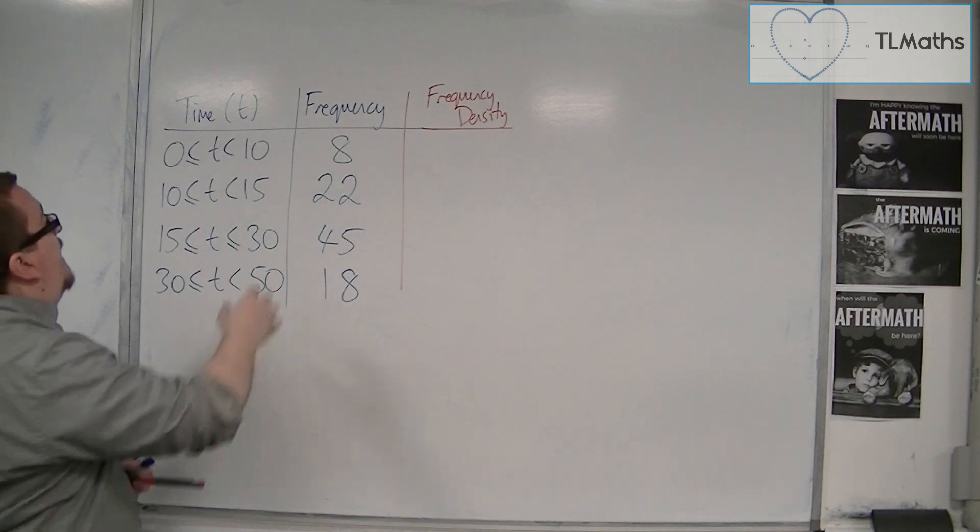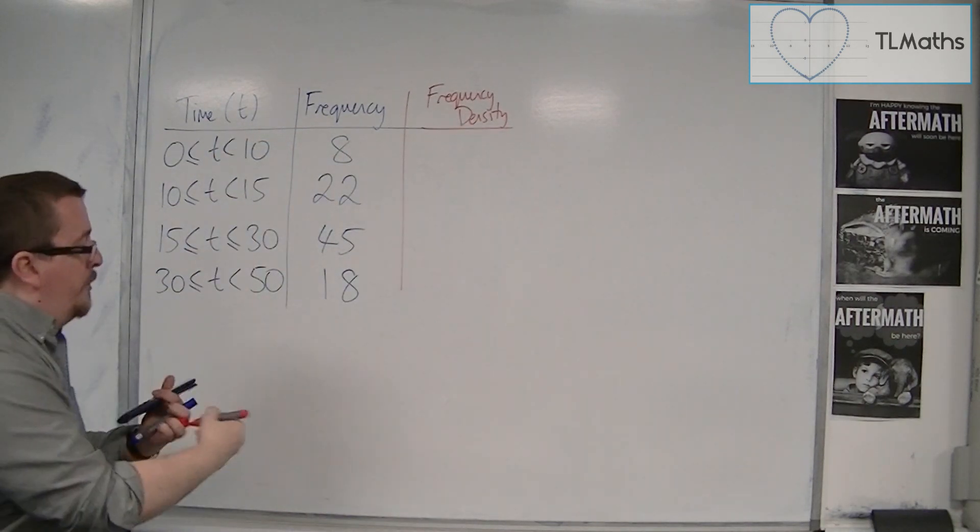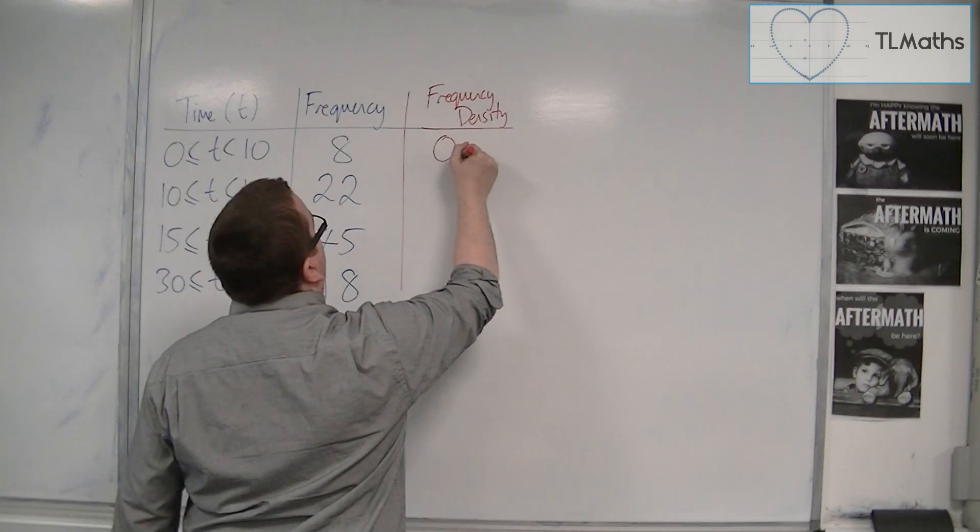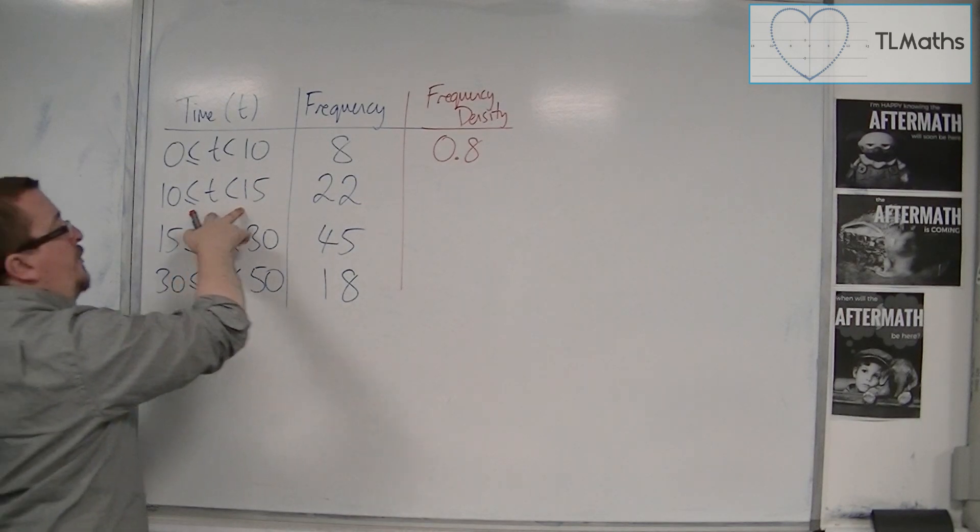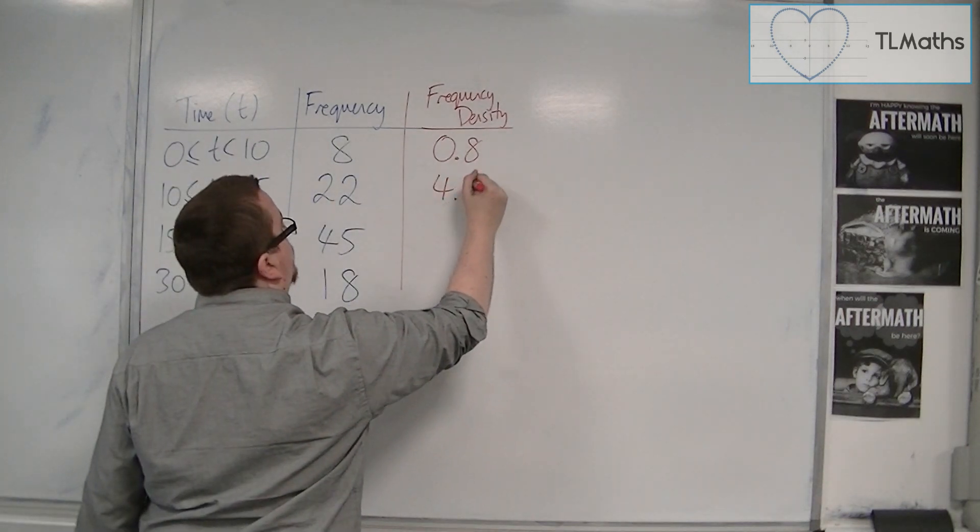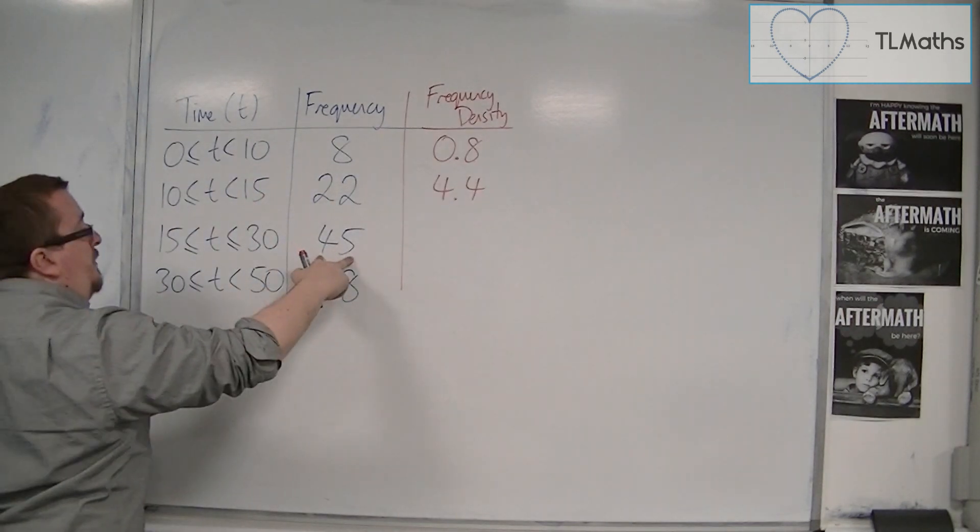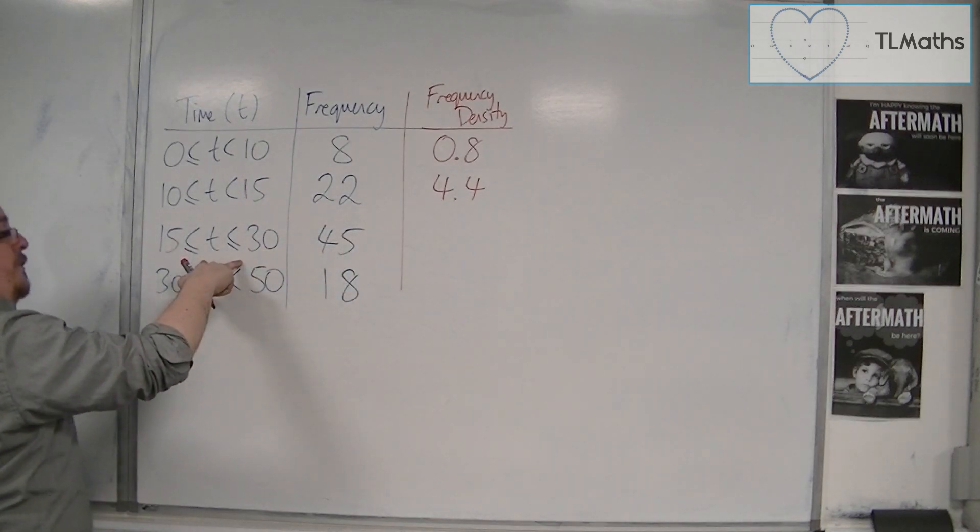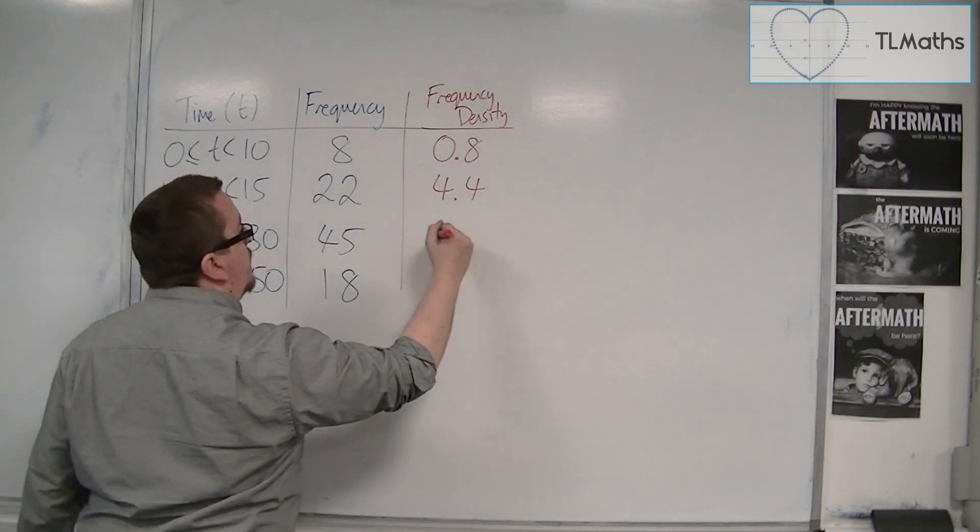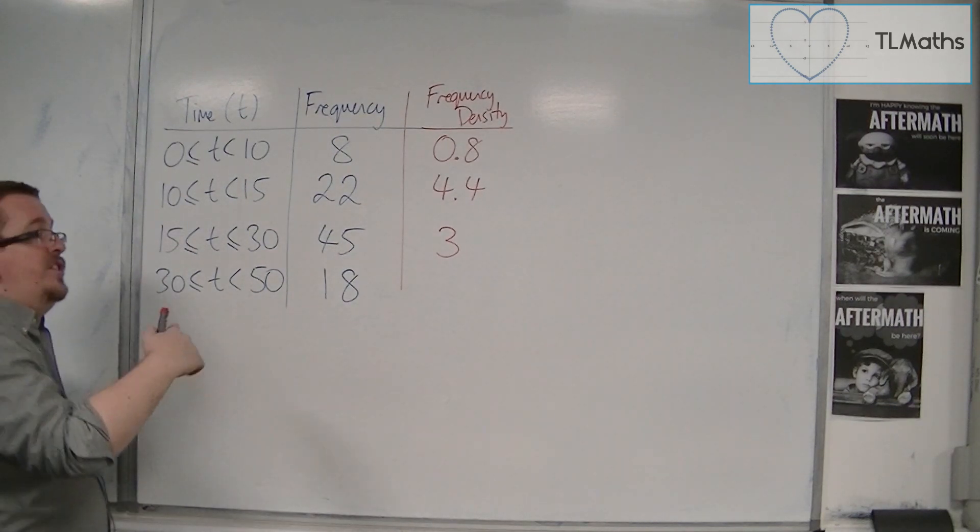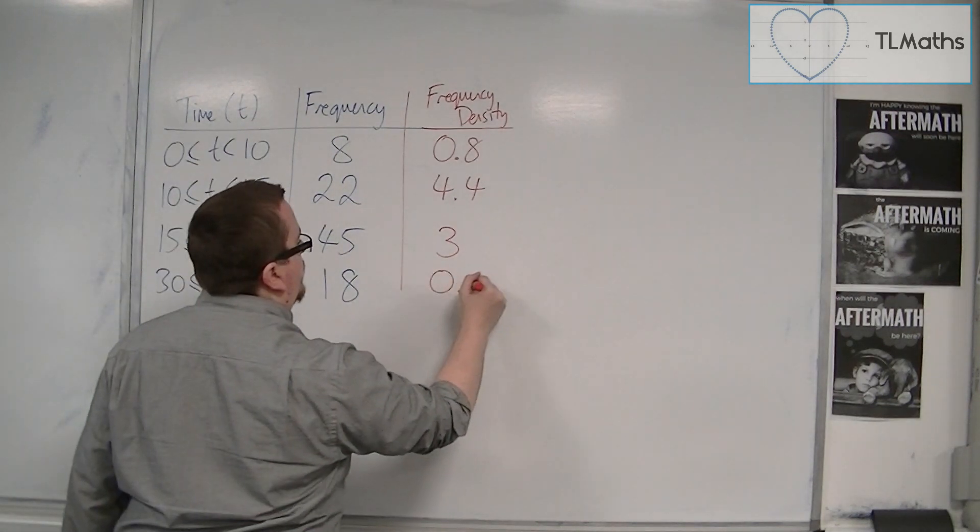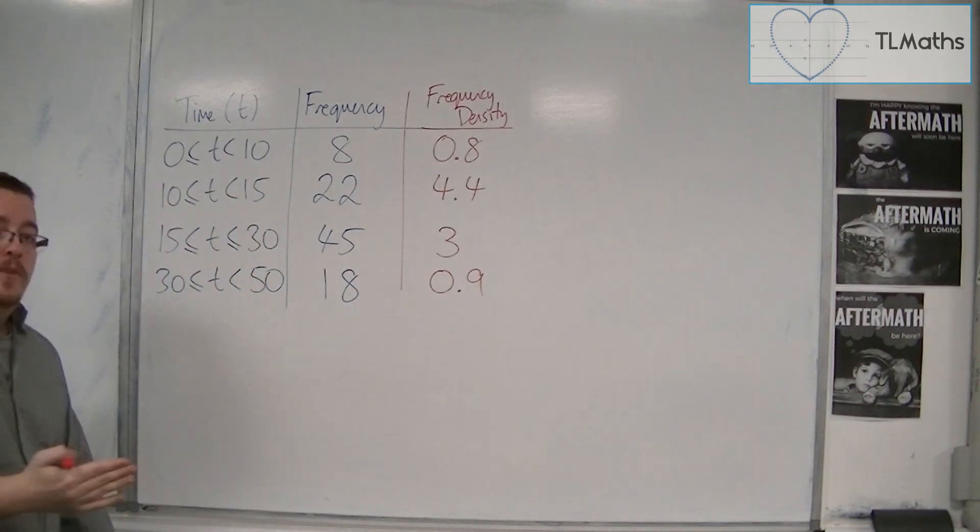So you would have 8 divided by 10, for example. So you'd have 0.8. You'd have 22 divided by 5, which is 4.4. You'd have 45 divided by 15, which is 3. And you'd have 18 divided by 20, which is 0.9. And these are your frequency densities.